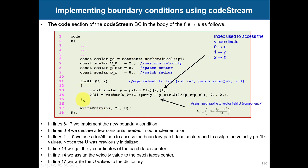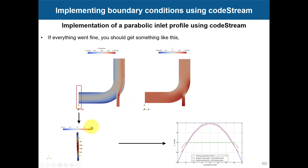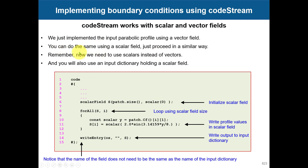Everything except the implementation block is a template. If you have no constants, omit that section. For a vector field use the vector type; for a scalar field use the scalar type. You run the case in the standard way — the only difference is that the boundary condition is compiled on the fly when you launch the solver. When you post-process, you get the parabolic inlet profile. As an exercise, try implementing the same parabolic profile on the other inlet, remembering to change the coordinate direction and the equation.